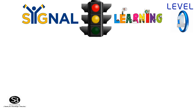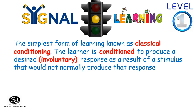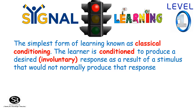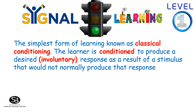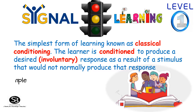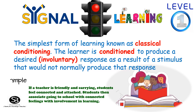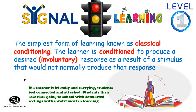The first level is Signal Learning. The simplest form of learning, known as classical conditioning, is signal learning. The learner is conditioned to produce a desired or involuntary response as a result of a stimulus that would not normally produce that response. For example, if a teacher is friendly and caring, students feel connected and attached, and then associate going to school with a feeling of connection and involvement in learning.